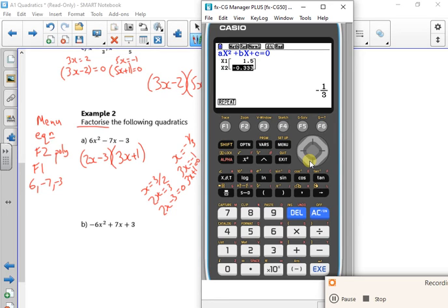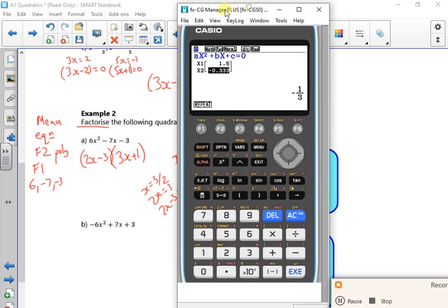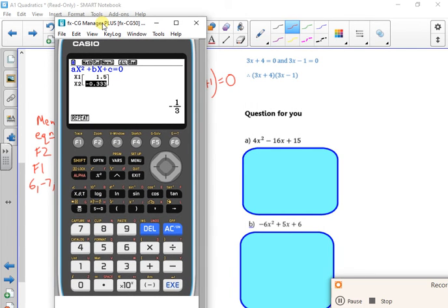If it was a solve it, it would be equal to 0 on the end of it. Now there is a question for you to have a go at. So if you have a go at that one, you should put in poly 4 minus 16, 15.